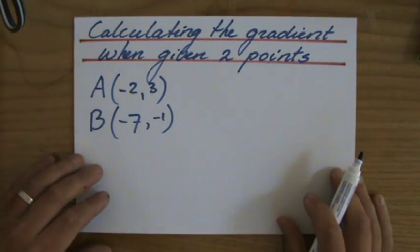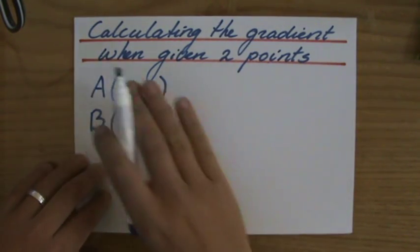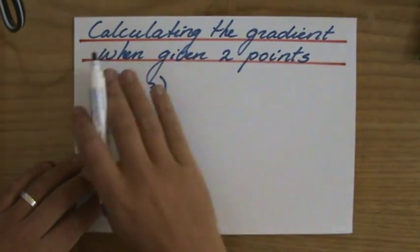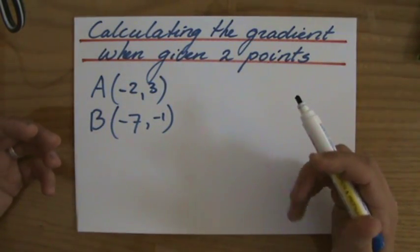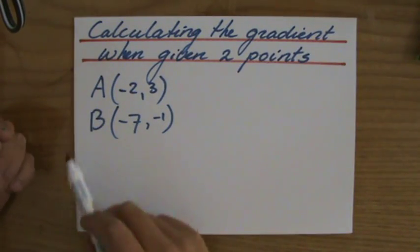All right, good afternoon. Now it's your turn to do some work. We are calculating the gradient of a line which goes through these two points, point A and point B.